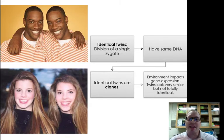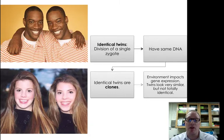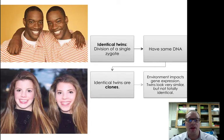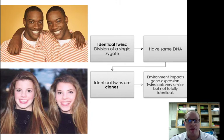Now, identical twins don't look exactly alike because, as is the case with identical twins, there are some environmental considerations that impact the expression of genes. So they don't look 100% exactly alike, but they look very, very similar, of course.